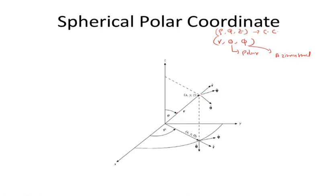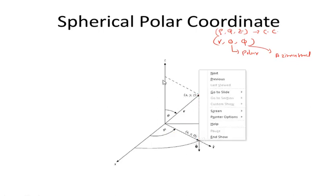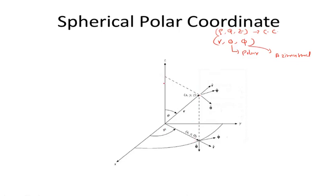Theta is the polar angle — that is, the angle the position vector r makes down from the z-axis. And phi is the projection of the point onto the x-y plane; it is the angle that projection makes with respect to the x-axis. Now, the coordinate r can vary from 0 to infinity.